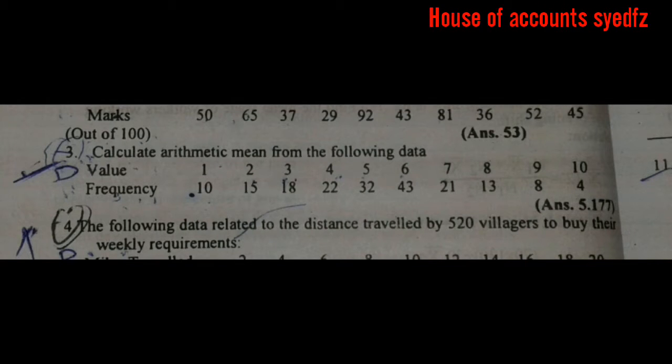Calculate the arithmetic mean from the following data. Value: 1, 2, 3, 4, 5, 6, 7, 8, 9, 10. Frequency is given: 10, 15, 18, 22, 32, 43, then it decreased 21, 13, 8 and 4.